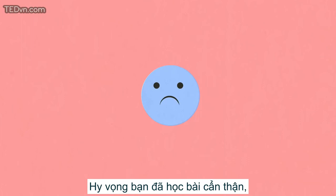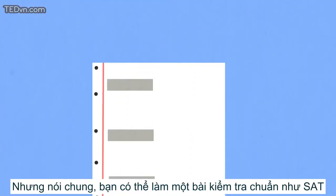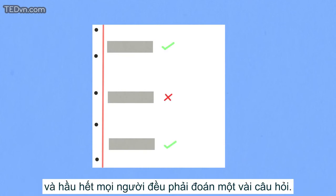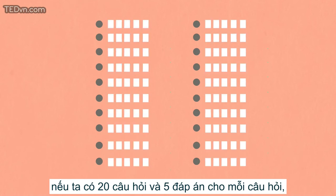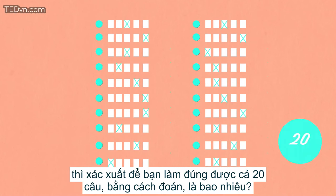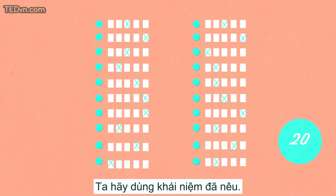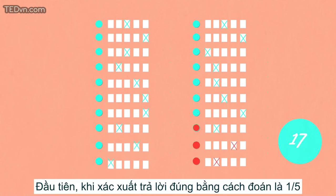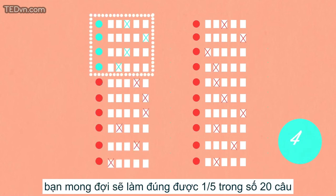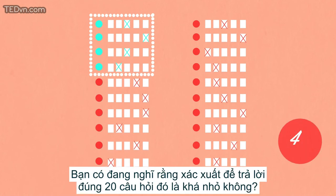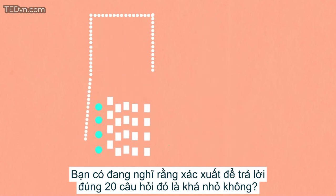Hopefully you study for quizzes, since it clearly doesn't pay to guess. But at one point you probably took a standardized test like the SAT, and most people have to guess on a few questions. If there are 20 questions and 5 possible answers for each question, what is the probability you would get all 20 right by randomly guessing? And what should you expect your score to be? Since the probability of getting a question right by guessing is 1 fifth, we would expect to get 1 fifth of the 20 questions right. Yikes — that's only 4 questions!